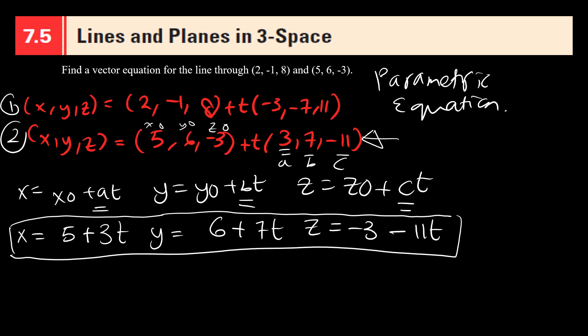Let's say if you guys want to choose the first one, if you guys choose the first one, you can also write the parametric equation of that. So X0, Y0, Z0, A, B, C. Then X equals 2 minus 3T, Y equals -1 minus 7T, Z equals 8 plus 11T. And this is it, the answer. Thank you.